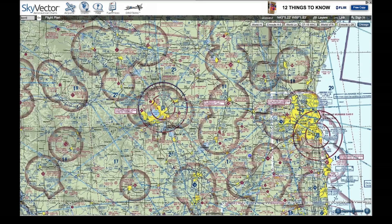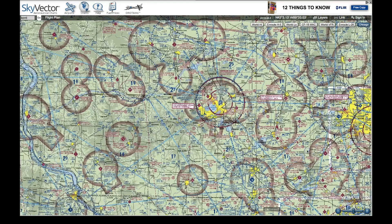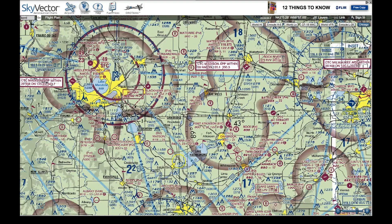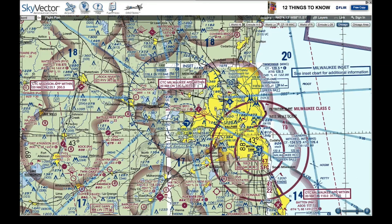We're going to get into latitude and longitude shortly, covering what 43 degrees and 90 degrees mean and how to work with those on sectional charts. That deserves a dedicated segment, so let's continue looking at our sectional charts for now.